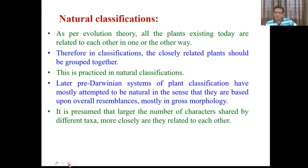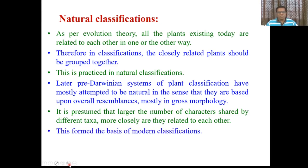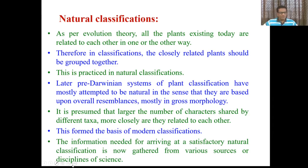For example, in Bentham and Hooker's classification, the family Malvaceae includes hibiscus, Malvaginus, and Gossypium - all having near about similar morphology. It is presumed that the larger the number of characters shared by different taxa, the more closely they are related. Maximum characters were traced out to group organisms, forming the basis of modern classification. The information needed for a satisfactory natural classification is gathered from various sources - palynology, cytology, genetics, morphology of chromosomes, karyotype and ideogram.